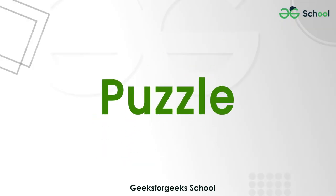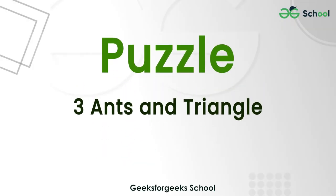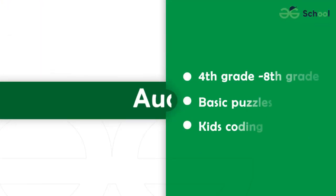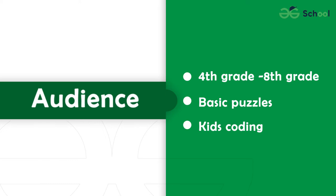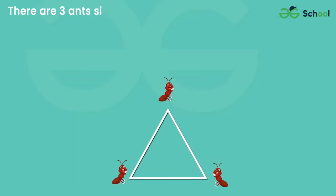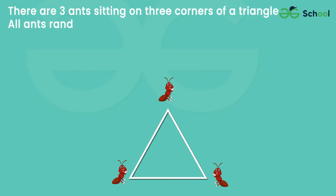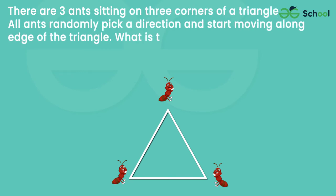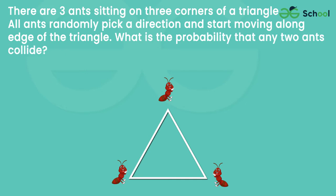Puzzle 3: Ants and Triangle. There are 3 ants sitting on 3 corners of a triangle. All ants randomly pick a direction and start moving along the edge of the triangle. What is the probability that any 2 ants collide?